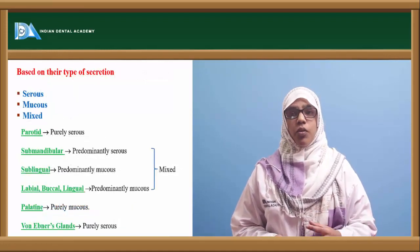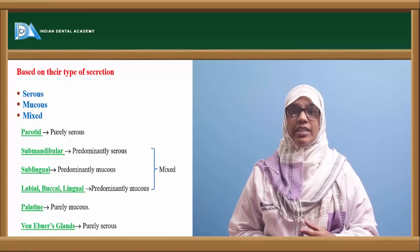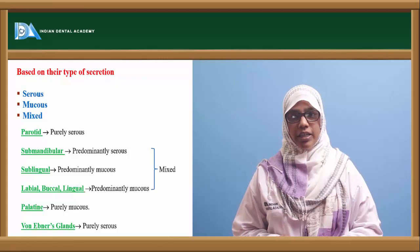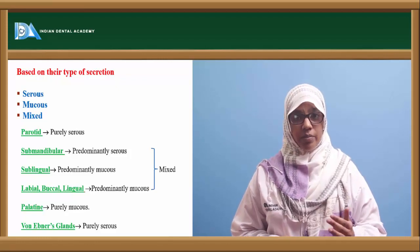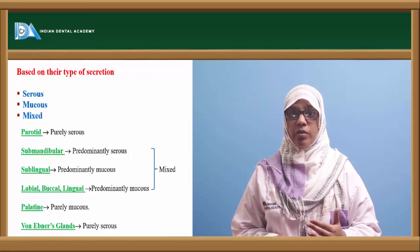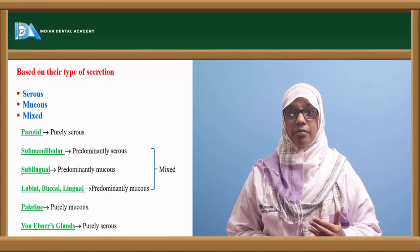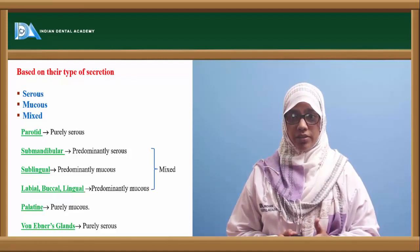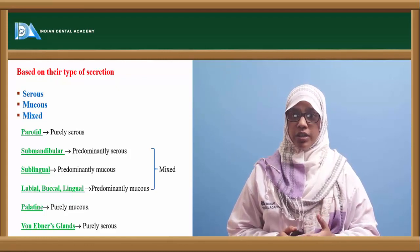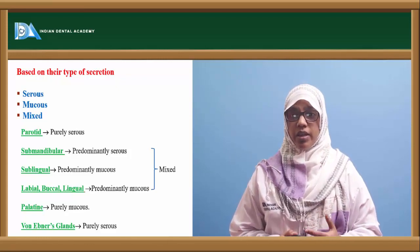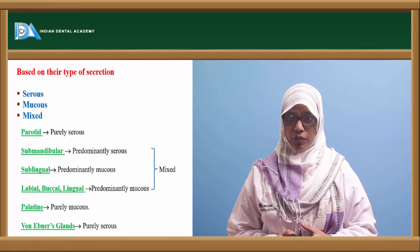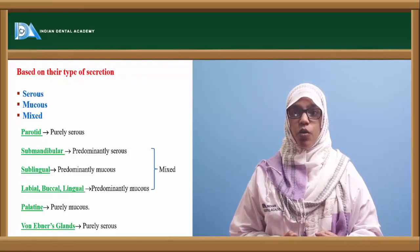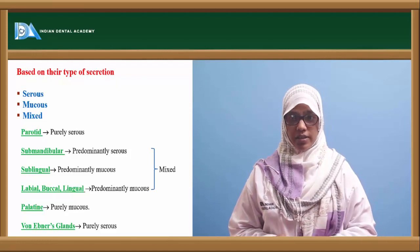Based on the type of secretion, glands can be divided into serous, mucous, and mixed glands. The parotid gland is purely serous, whereas submandibular, sublingual, labial, buccal, and lingual glands are mixed glands — in which the submandibular gland is predominantly serous, sublingual is predominantly mucous, and labial and buccal glands are predominantly mucous. Palatal glands are purely mucous, and von Ebner's glands are purely serous.